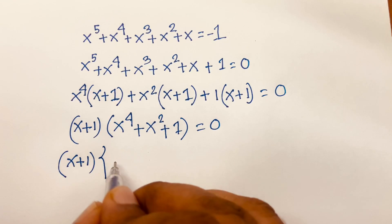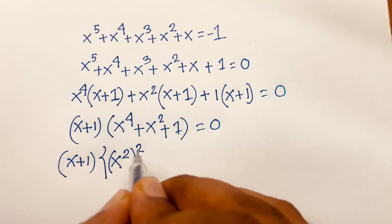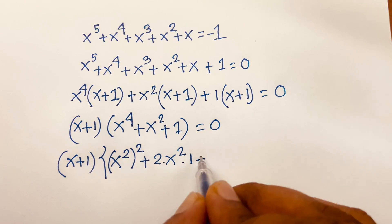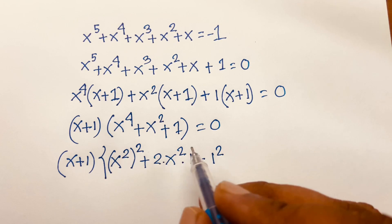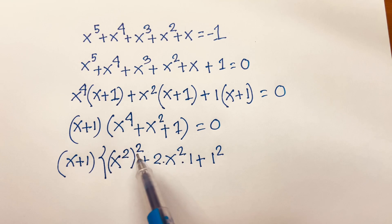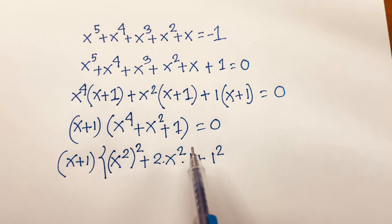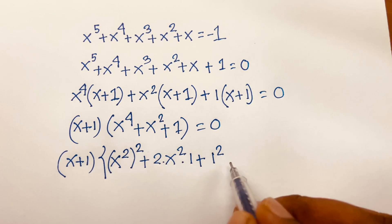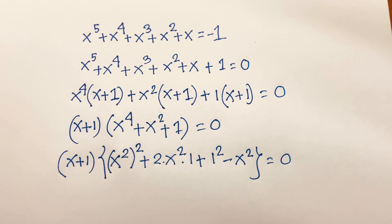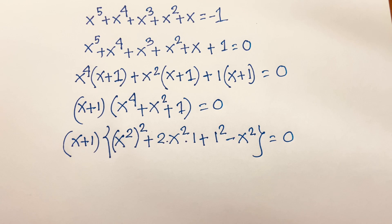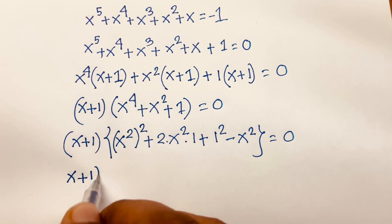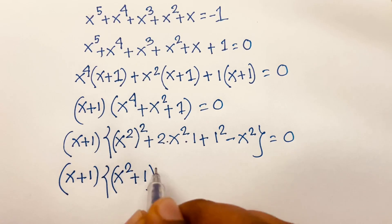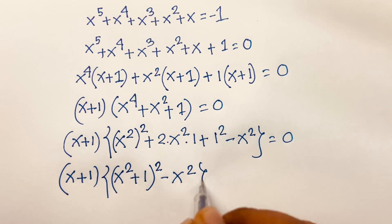Now I rewrite x⁴ + x² + 1 by recognizing that (x² + 1)² equals x⁴ + 2x² + 1. Since I have x⁴ + x² + 1, I subtract x², so this becomes (x² + 1)² minus x² equals zero.